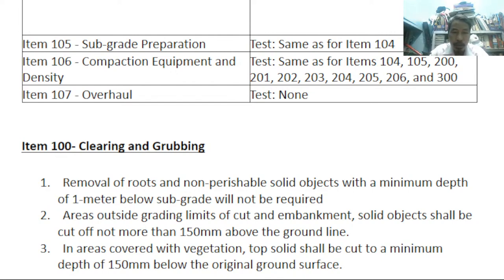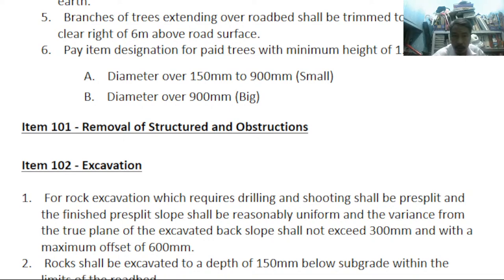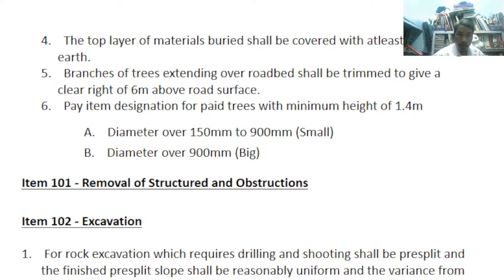Number three: in areas covered with vegetation, topsoil shall be cut to a minimum depth of 150 mm. Take note — 150 mm is very important to memorize. Number four: the top layer of materials buried shall be covered with at least 300 mm of earth, meaning one foot. You have to put the soil from the excavation back as cover.